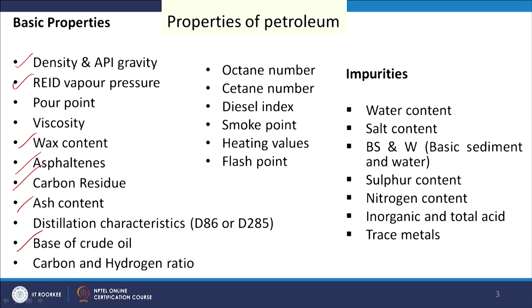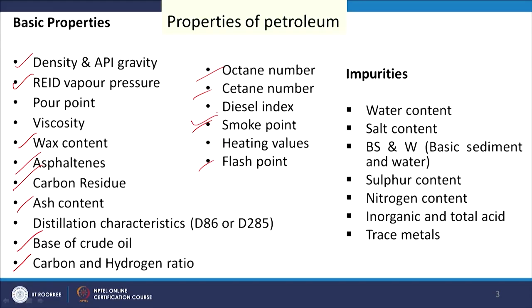Then we have the base of crude oil, which is also an important parameter, and the carbon-to-hydrogen ratio. Octane number, cetane number, diesel index, smoke point, and flash point are also relevant from an application standpoint for certain petroleum products. For example, smoke point is used for kerosene, octane number for gasoline, and cetane number for diesel.